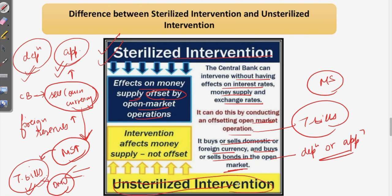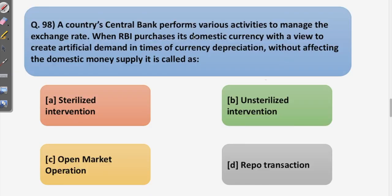Unsterilized intervention, as the name suggests, is an intervention that affects money supply with no offsetting of that effect. If money supply was increased and no T-bills or open market operations are conducted afterward, that is unsterilized intervention. But if the government chooses to offset this through open market operations, it becomes sterilized intervention. The answer to the question is sterilized intervention.